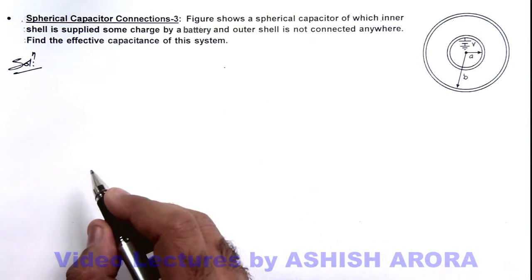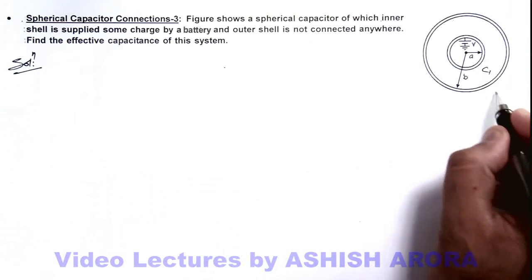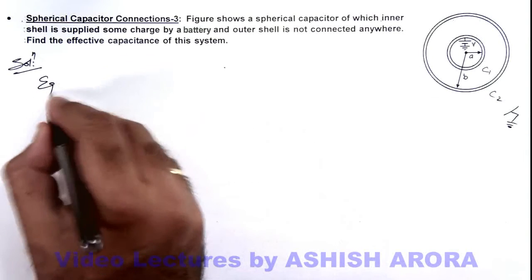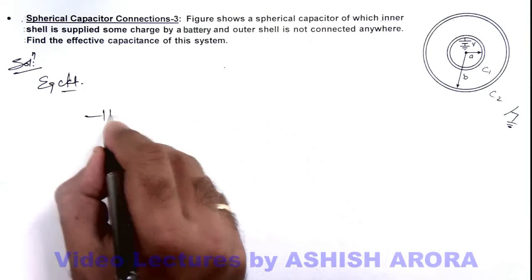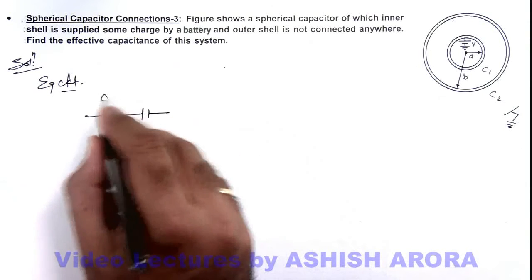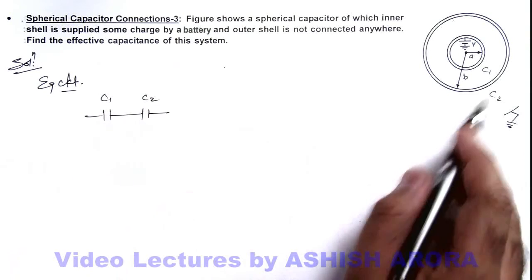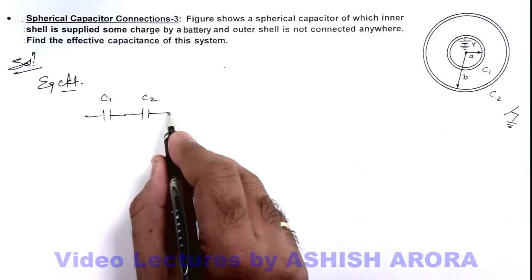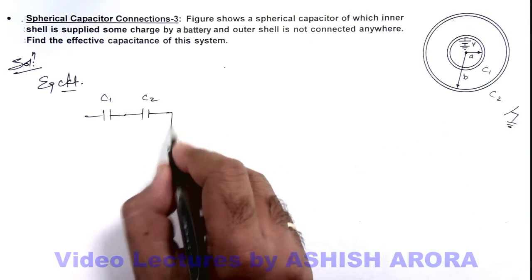So here you can see if this C1, this C2, and the outer plate of C2 is assumed to be connected to earth. In the equivalent circuit of this situation there are two capacitors, C1 and C2. The middle shell is not connected anywhere and the outer shell is directly connected or assumed to be connected to earth.